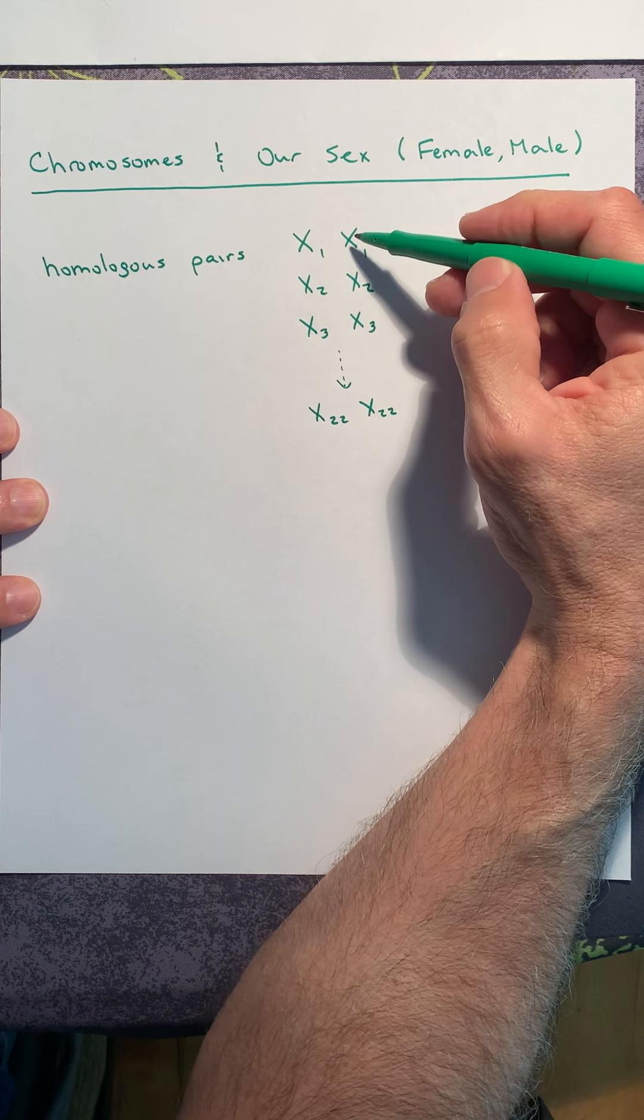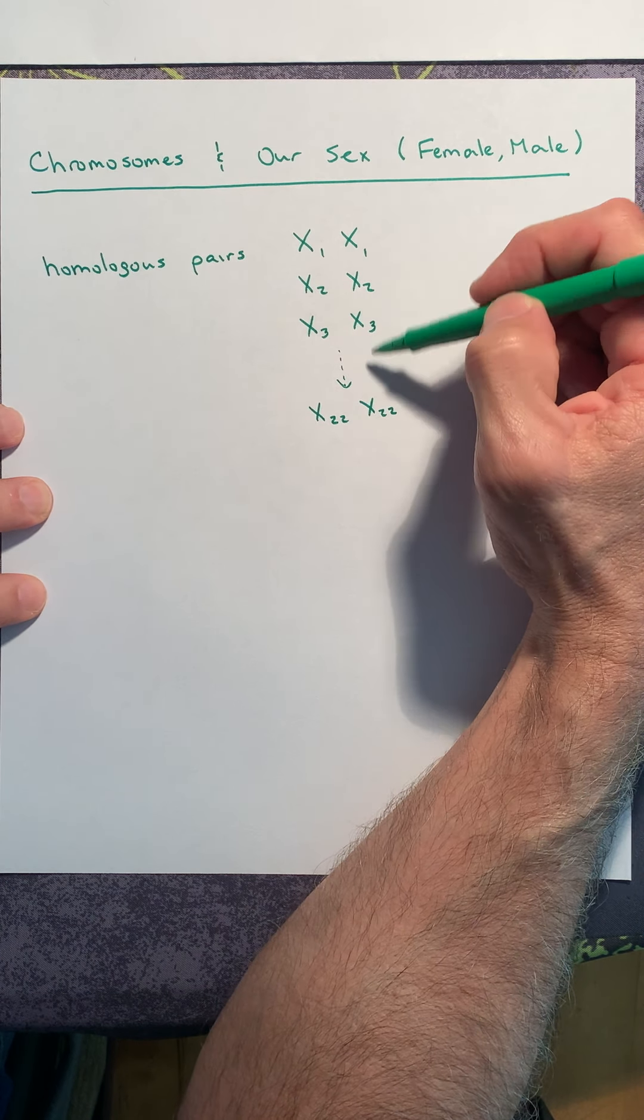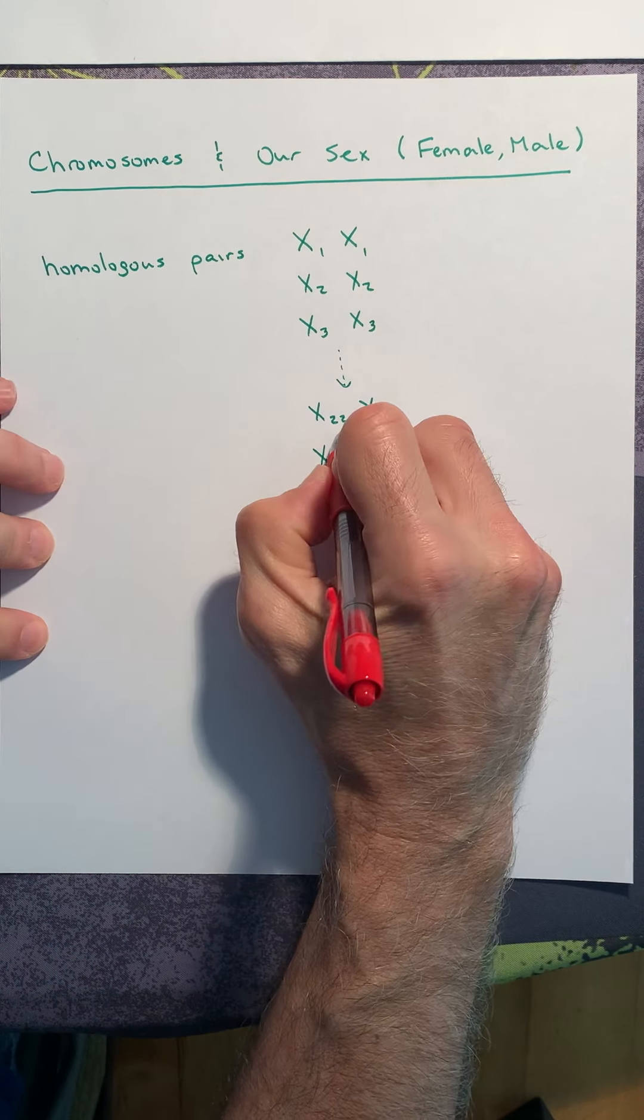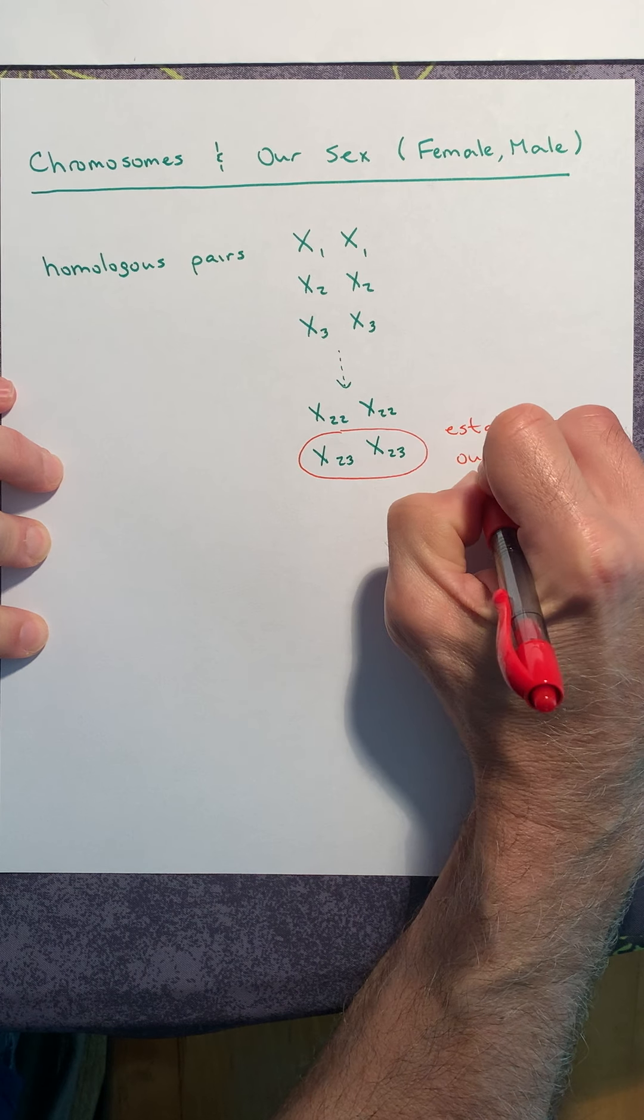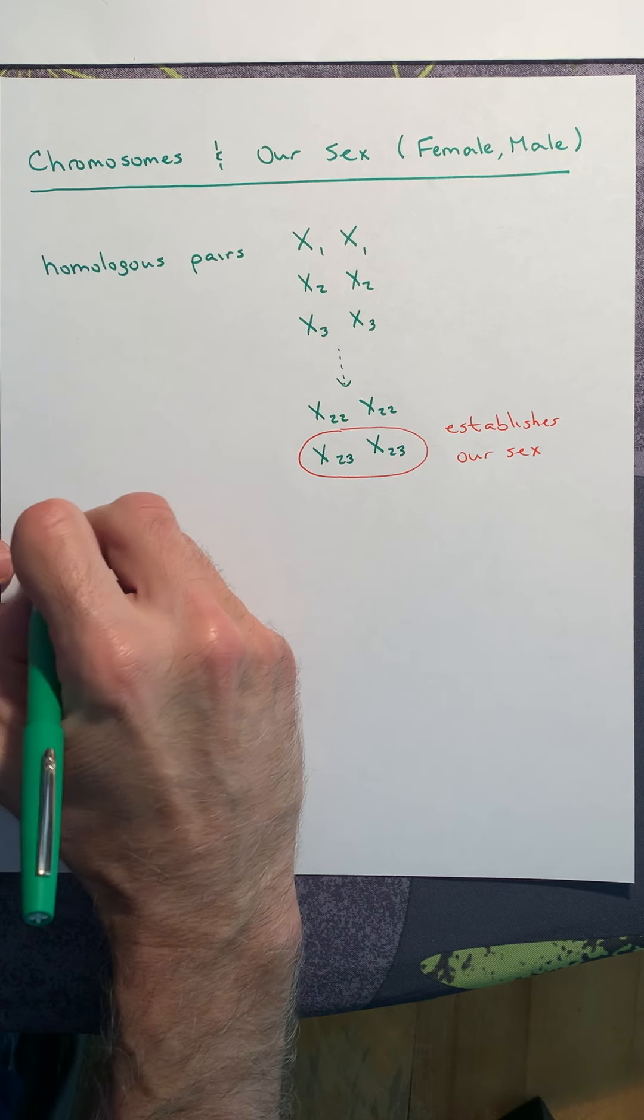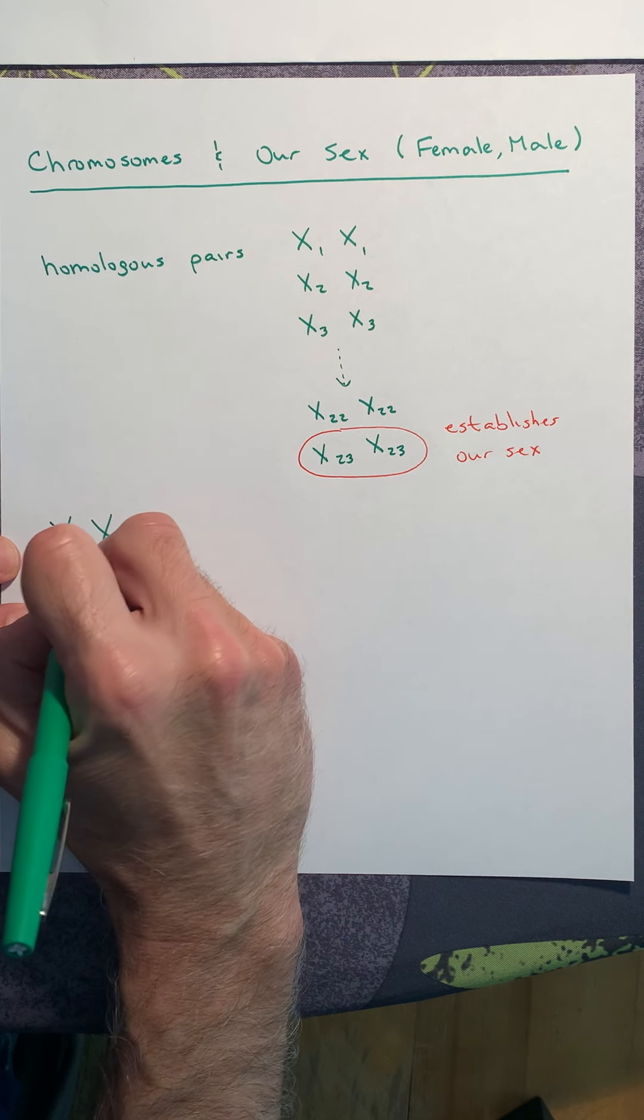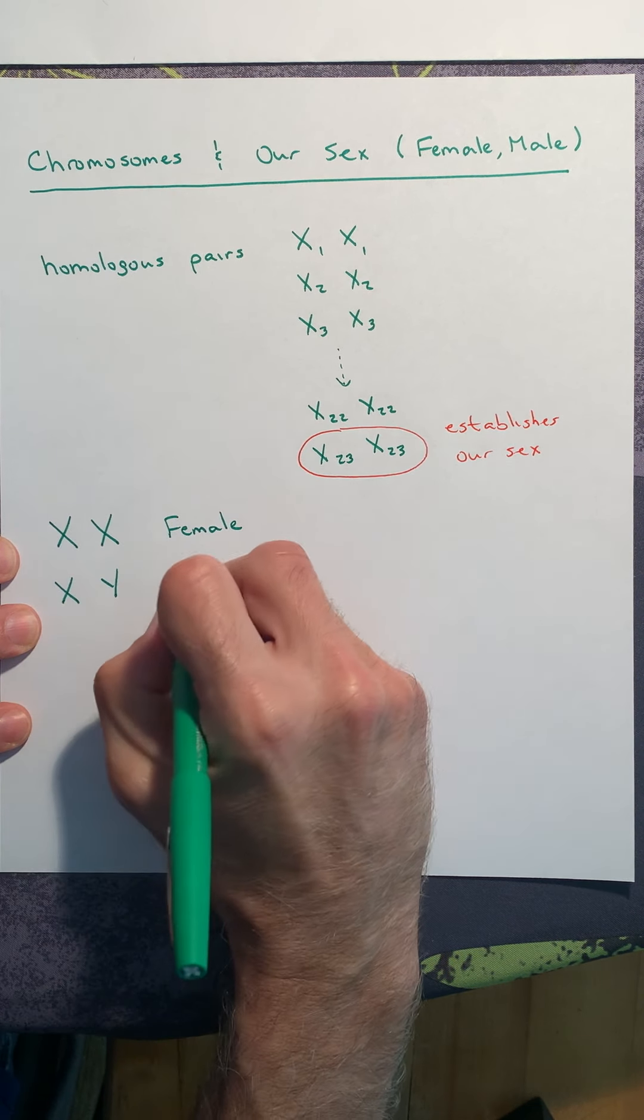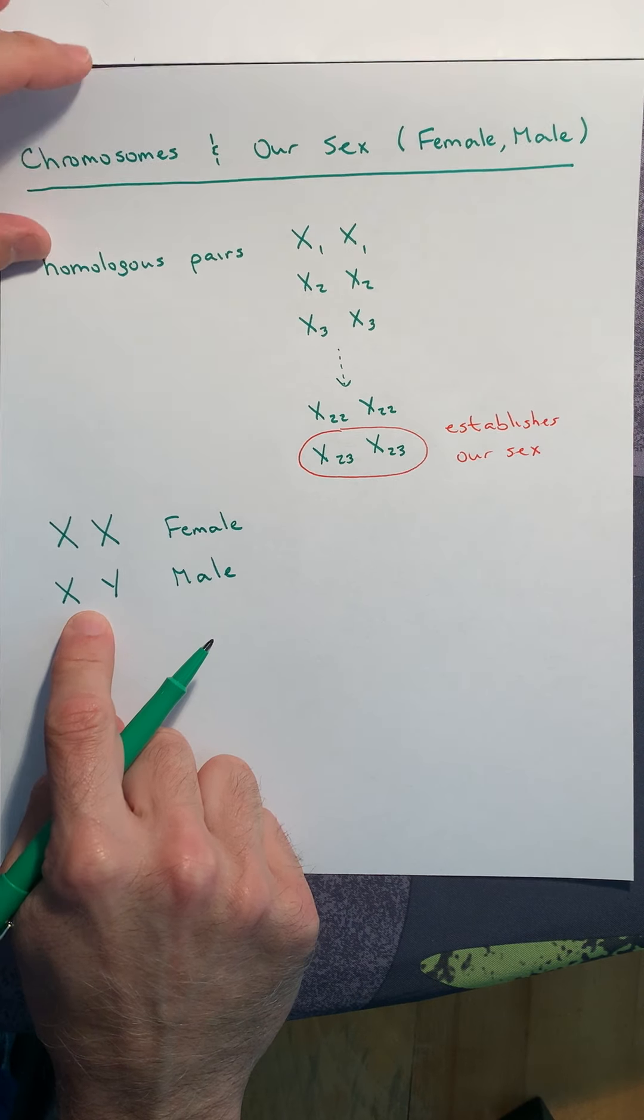And there's many alleles that are carried on one through 22. And we refer to those as being autosomal. But then when we get to our 23rd pair, that pair is a little different because the 23rd pair of chromosomes establishes our sex, whether we are biologically male or female. So how we define males and females is we say that if the individual is XX for their 23rd pair, they are female. And if they are XY for their 23rd pair, they are male. So it's biologically determined by our 23rd pair of chromosomes.